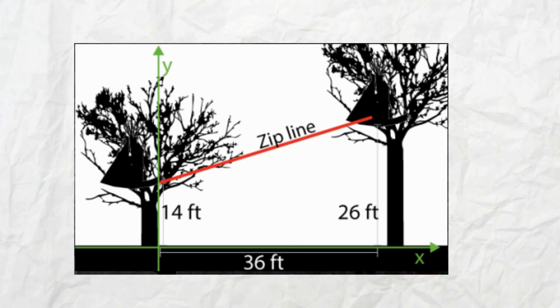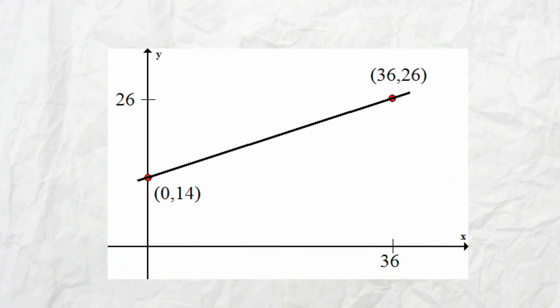What I'd like to do now is remove the fancy images and create a graph. If I treat Jim's house as the y-axis and the ground as the x-axis, place points where the tree houses are, I'll have the following graph.